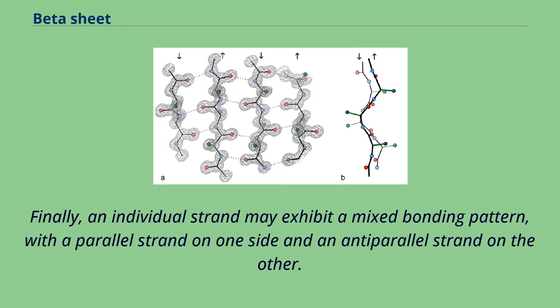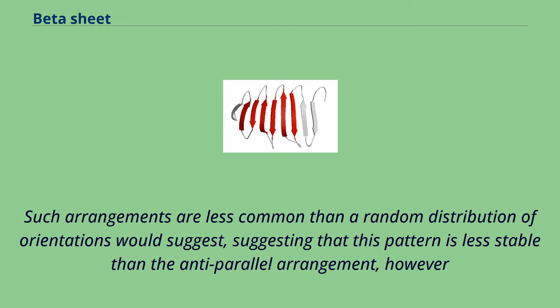Finally, an individual strand may exhibit a mixed bonding pattern, with a parallel strand on one side and anti-parallel strand on the other. Such arrangements are less common than a random distribution of orientations would suggest, suggesting that this pattern is less stable than the anti-parallel arrangement.